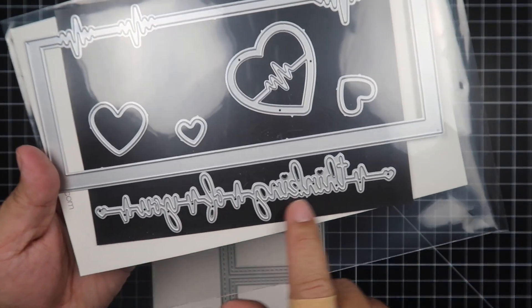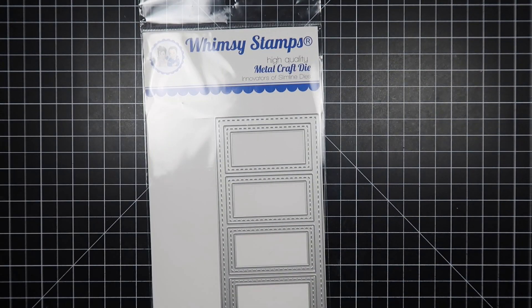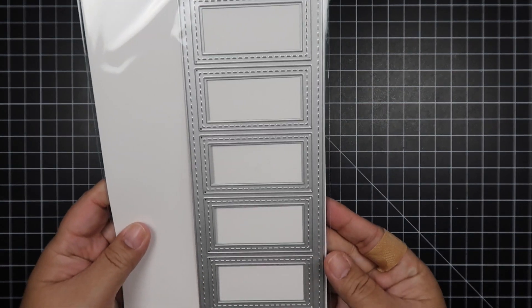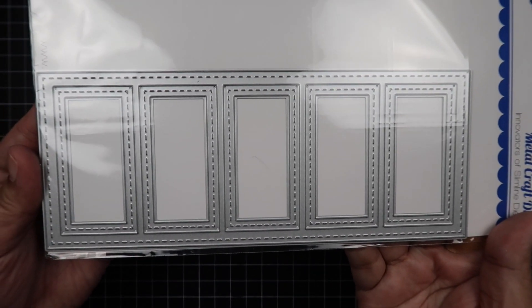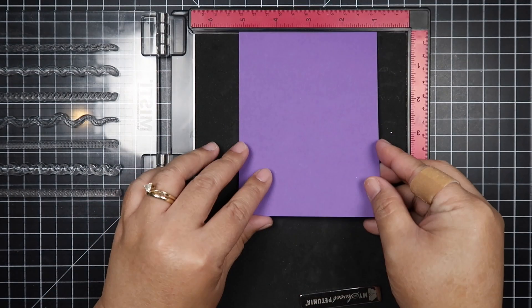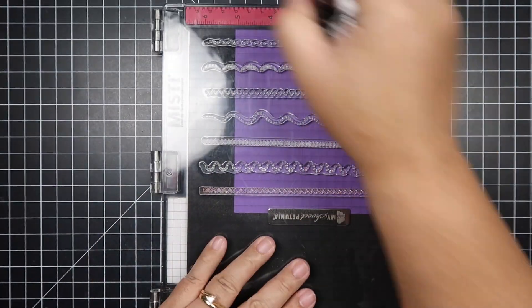I also brought in the new release Heartbeats die and I'll be using the word die that you see there. Then I also brought in the Five Frames Slimline die. This is one of my favorite slimline dies from Whimsy because you can tell a story inside each of those rectangles.